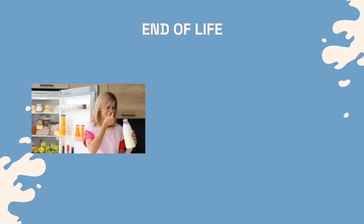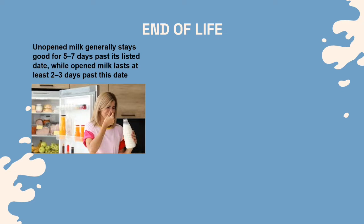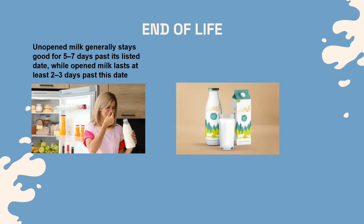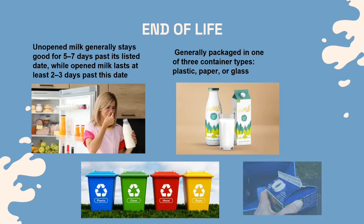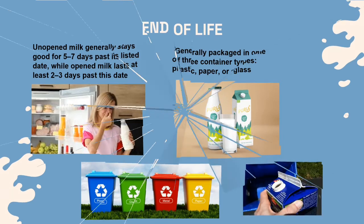As for the end-of-life stage, unopened milk generally stays good for 5–7 days past its listed date, while opened milk lasts at least 2–3 days past this date. Fresh milk is generally packaged in one of three container types: plastic, paper, or glass. All of these types of packaging are recyclable, and some of them are biodegradable.